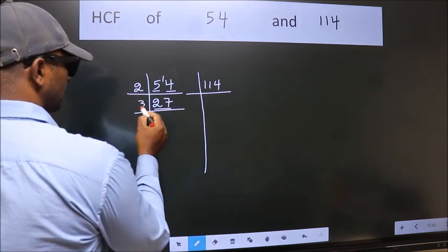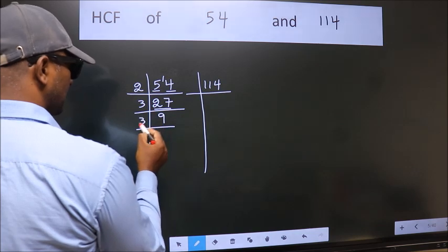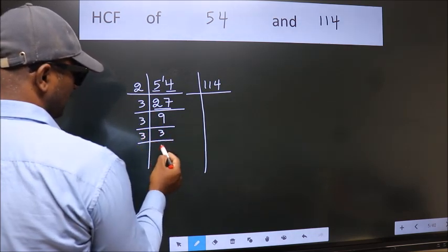Now 27 is 3 times 9 equals 27. 9 is 3 times 3 equals 9. 3 is a prime number, so 3 times 1 equals 3.